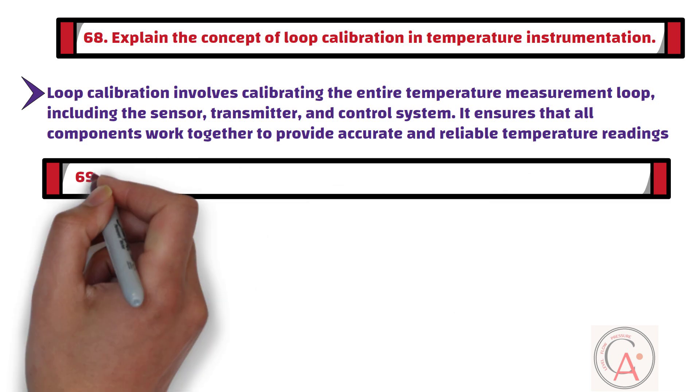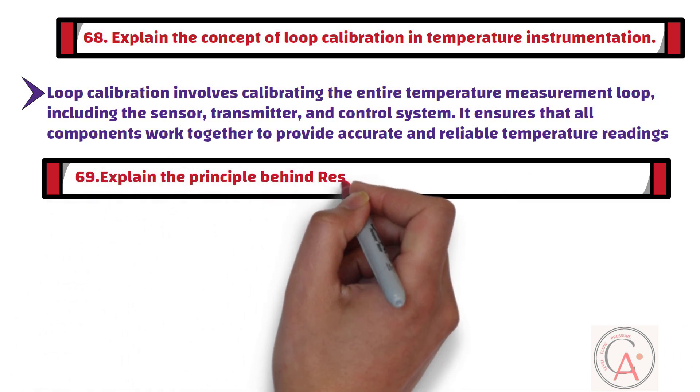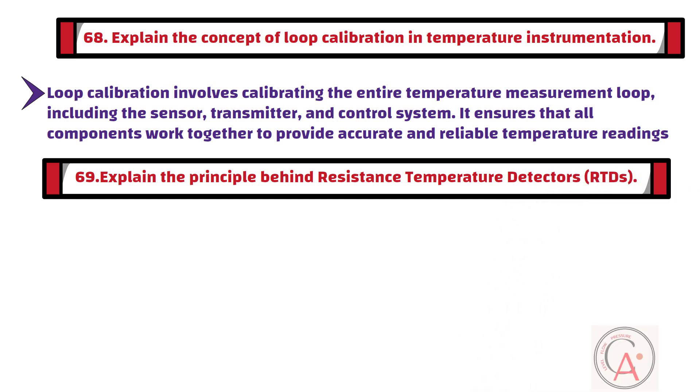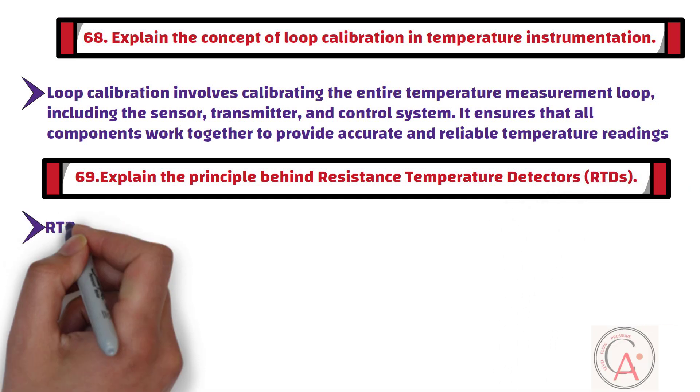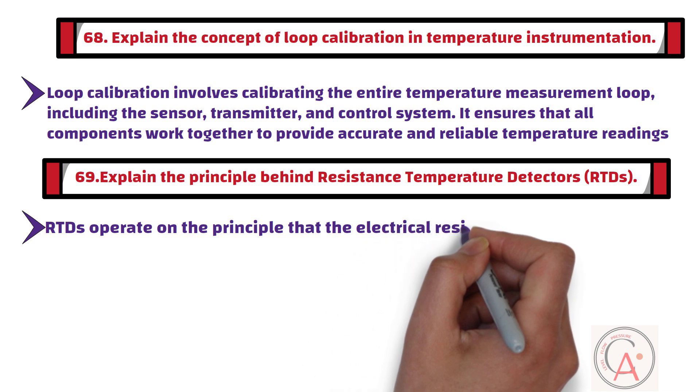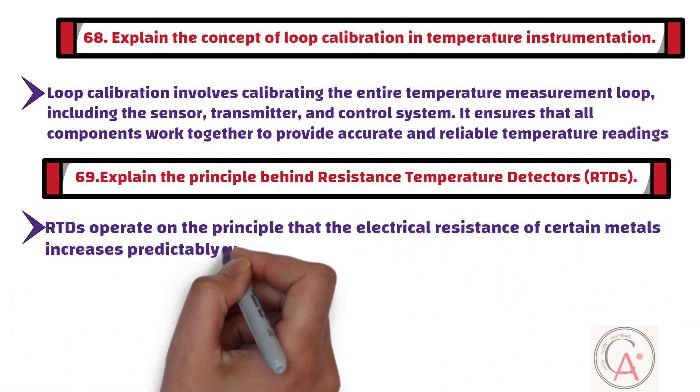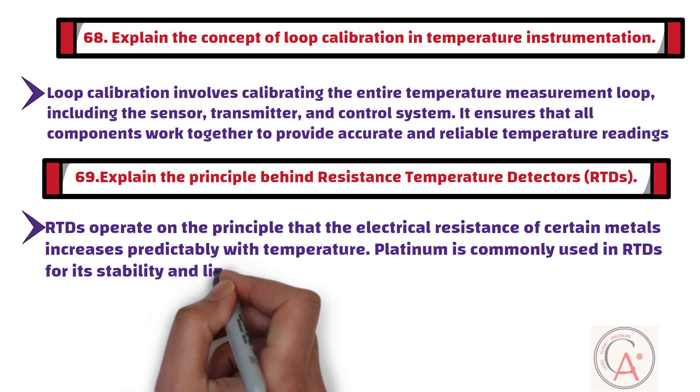Question number 69: Explain the principle behind resistance temperature detectors. RTDs operate on the principle that the electrical resistance of certain metals increases predictably with temperature. Platinum is commonly used in RTDs for its stability and linearity.